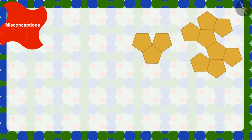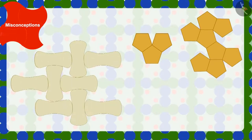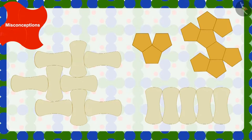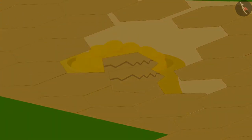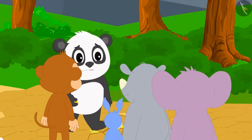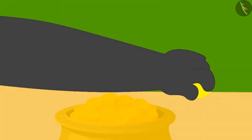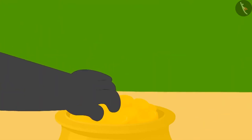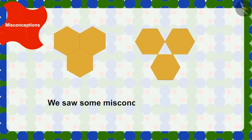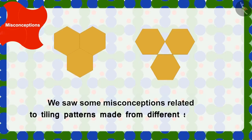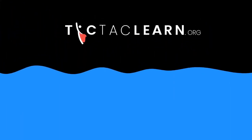Remember, children, there are many shapes like this one which cannot be used to make designs that have no space between them. Golu kept trying the whole night, but he could not make a pattern with those tiles. In the morning, a big crowd had gathered around Golu, and he had to share the treasure with all those people. Children, we saw some misconceptions related to the tiling pattern made from different shapes.